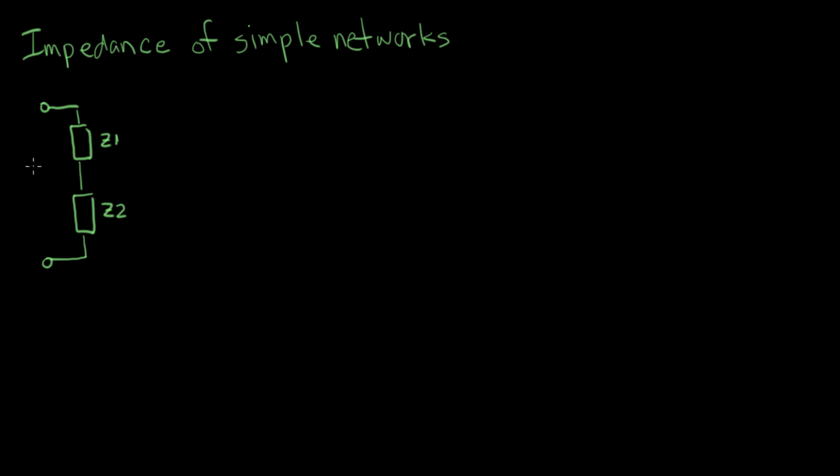Let's talk about the idea of the impedance of some simple networks. What I've shown here is a very simple network with two impedances in it, Z1 and Z2. Inside these boxes are one of our favorite passive components, either an R, an L, or a C. We're going to look at combinations of this and figure out what the impedance of simple combinations are.